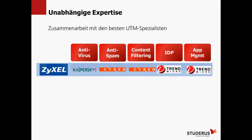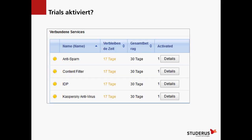Zyxel arbeitet mit unabhängigen Experten zusammen: Antivirus wird durch Kaspersky angeboten, Anti-Spam und Content-Filter durch Siren, IDP und Application Management durch Trend Micro. Ein wichtiger Appell: Jedes USG oder Zyxel-Modell hat die Möglichkeit, einen 30-tägigen Trial durchzuführen. Nutzen Sie das aus – zumindest die Unsafe-Kategorien blockieren, Reporting aktivieren, und schauen, was blockiert wird.